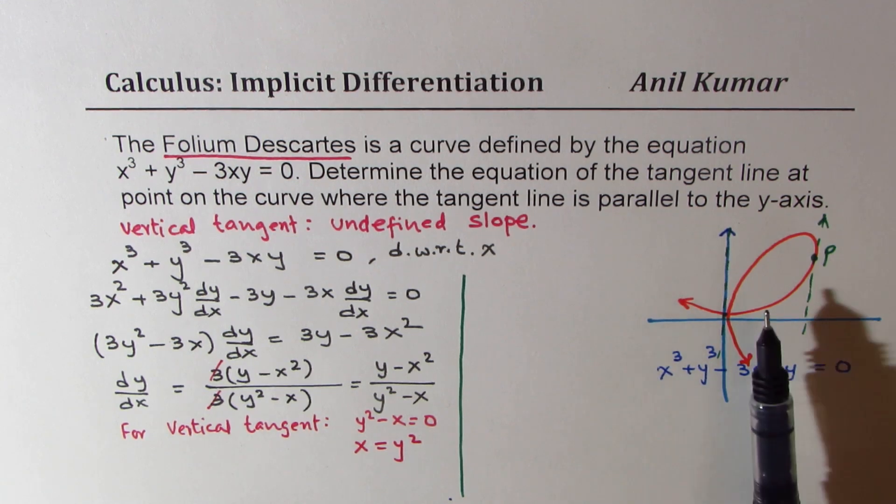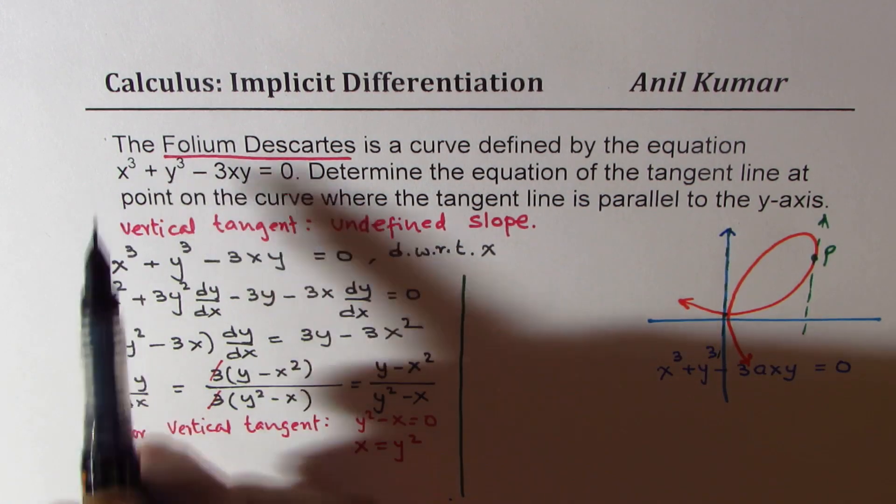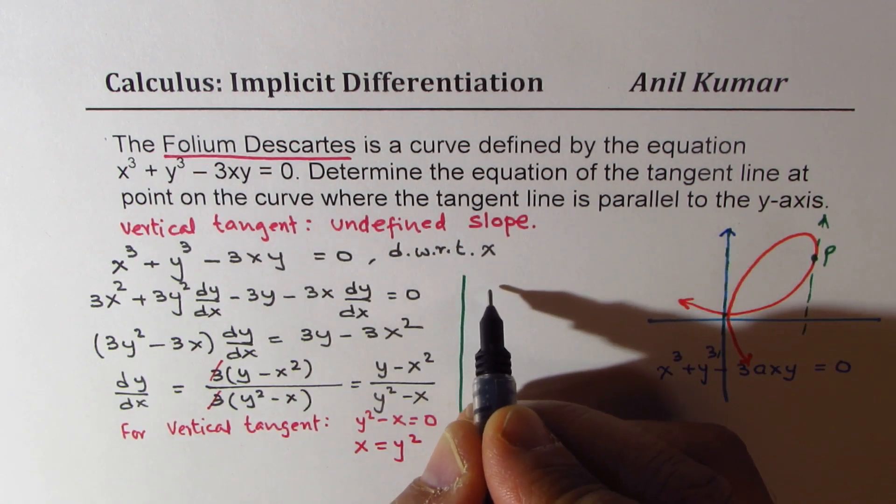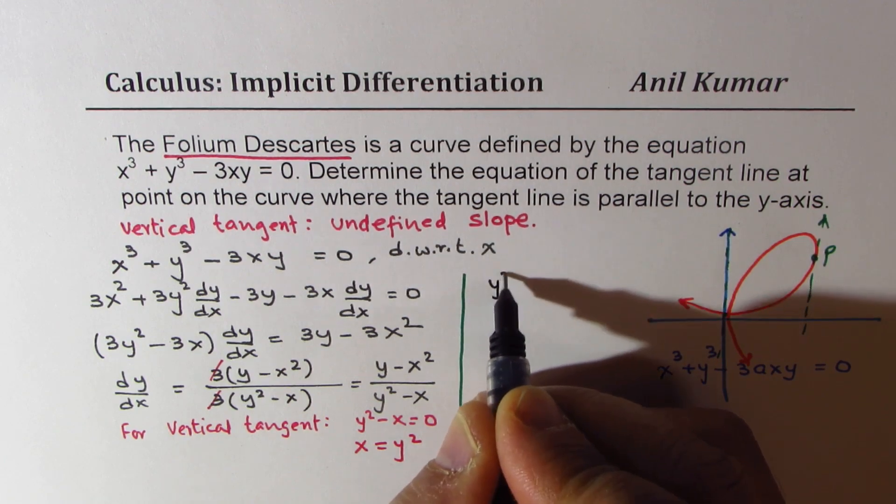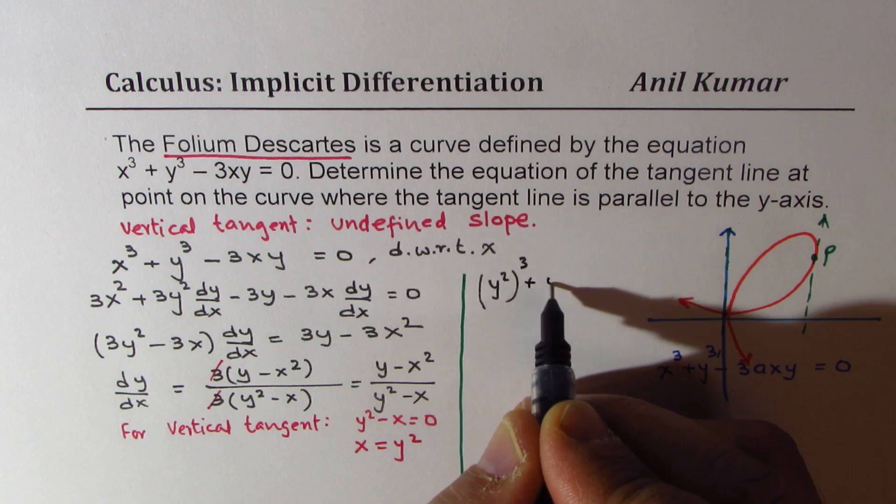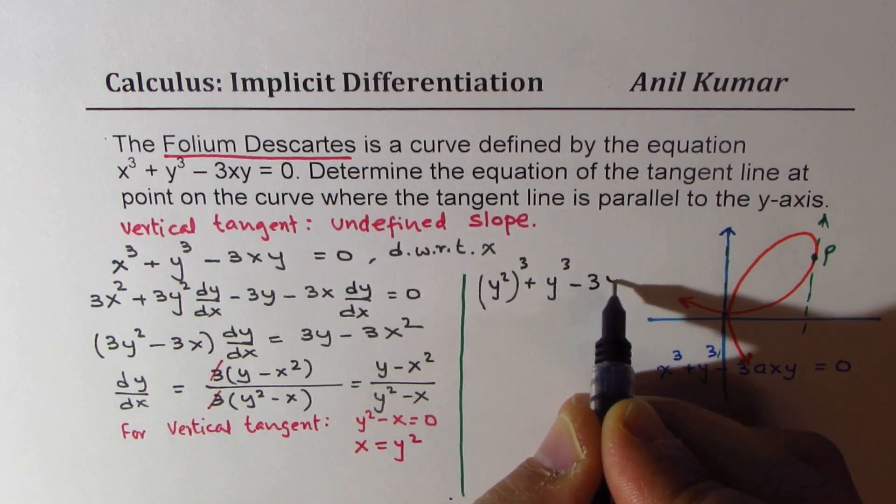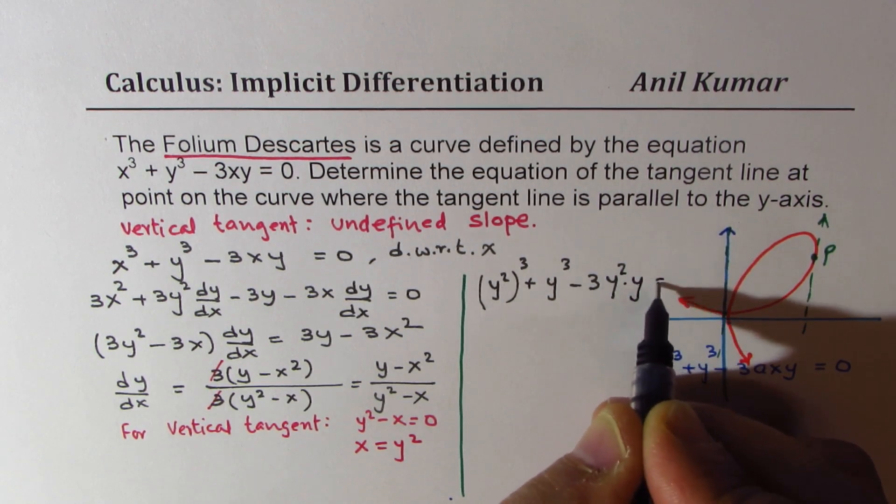Clearly, this is not a function, it's a relation. Substituting y squared for x in our equation, we get y squared whole cubed plus y cubed minus 3y squared y equals to 0.